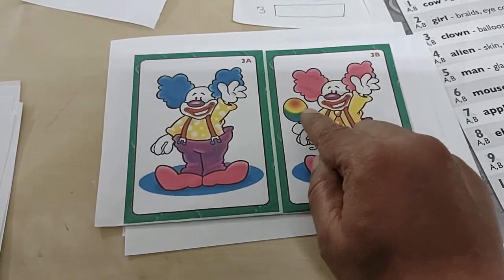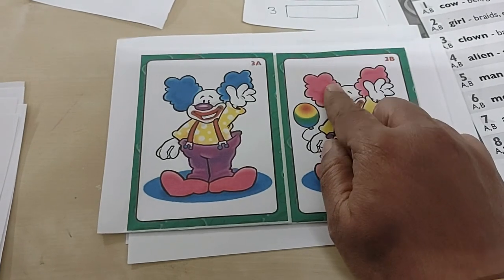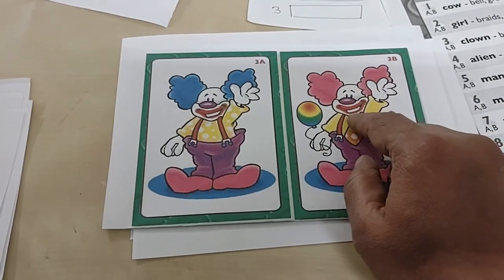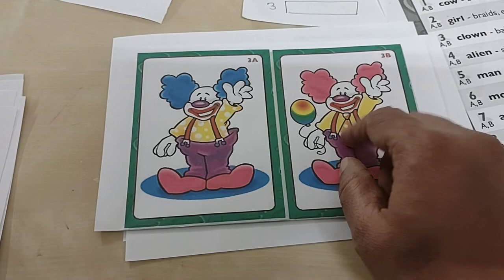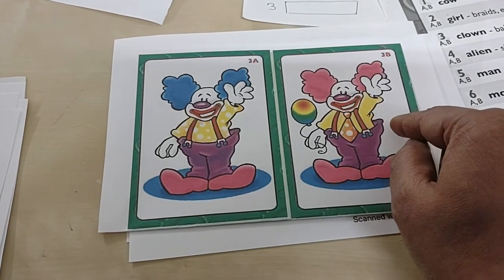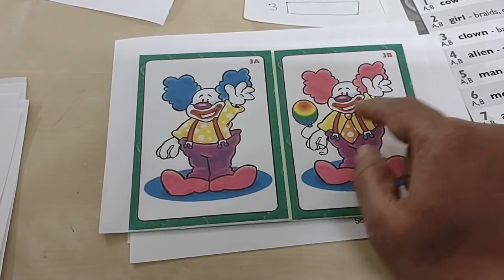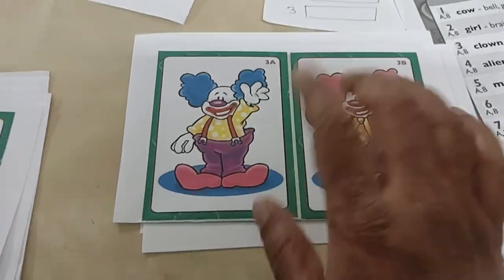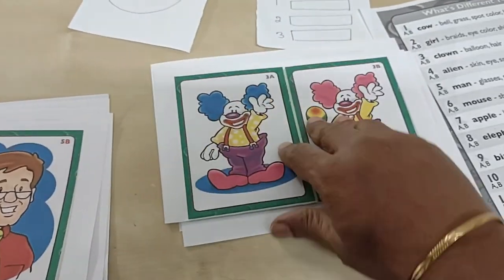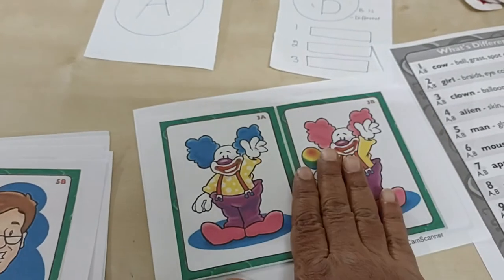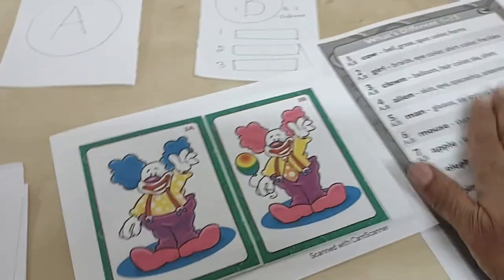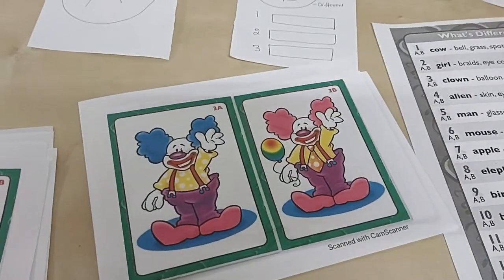B clown has a balloon, B clown hair color is pink, B clown is wearing an orange t-shirt, B clown's shirt is without dots. Like this, I make it separate, one by the child, one by the parents with their prompts.